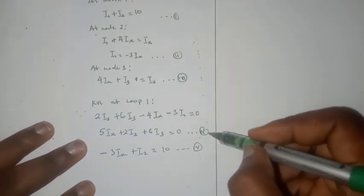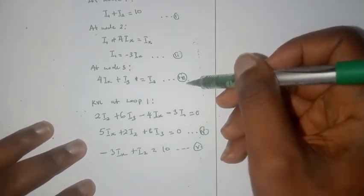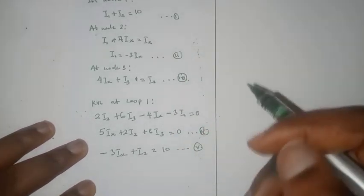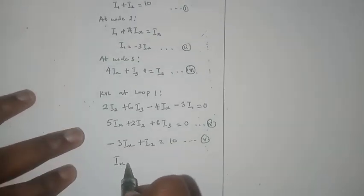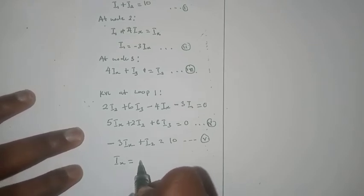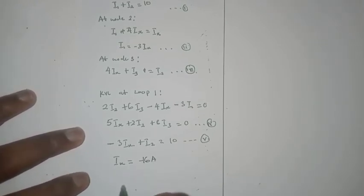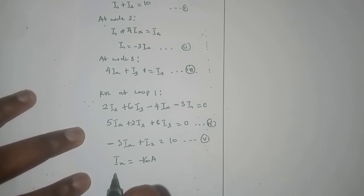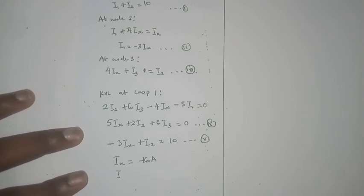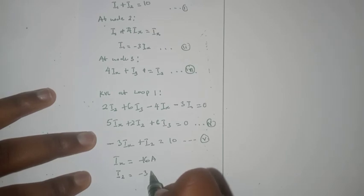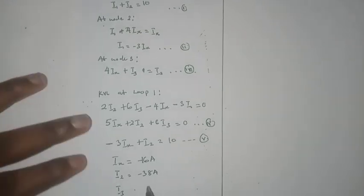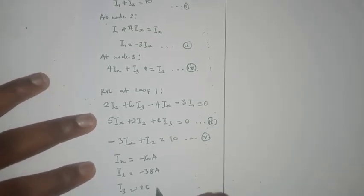These three equations simultaneously using our calculator, and we'll derive at ix equals minus 16 amperes, i2 equals minus 38 amperes, and i3 equals 26 amperes.